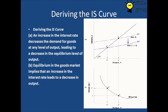This is because an increase in output leads to a less than one-for-one increase in demand. Now let's derive the IS curve. Looking at the two figures, the IS curve is derived by joining equilibrium points of the goods market. The upper part shows that an increase in the interest rate decreases the demand for goods at any level of output, leading to a decrease in the equilibrium level of output. Equilibrium in the goods market implies that an increase in the interest rate leads to a decrease in output — this is why the IS curve is downward sloping.